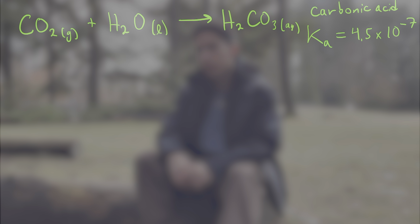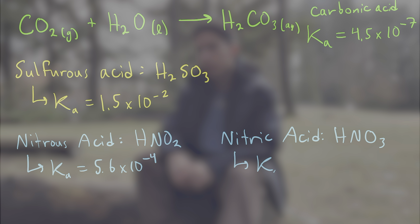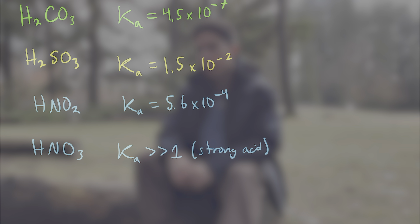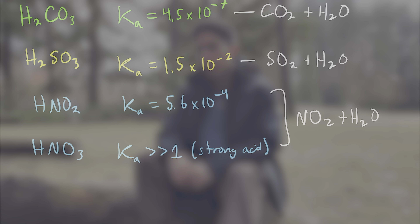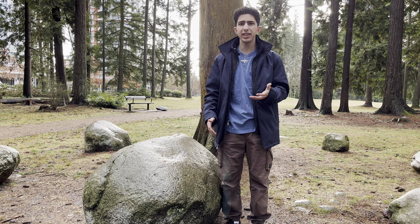The acids that form thanks to the combination of sulfur and nitrogen oxides with water are much more acidic. Sulfurous acid has a Ka of about 1.5 times 10 to the minus 2. Nitrous acid is at 5.6 times 10 to the minus 4, and nitric acid is such a notoriously strong acid that it has a Ka far above 1. The larger the Ka, the stronger the acid. These three acids are many orders of magnitude stronger than carbonic acid, which is why elevated SO2 and NO2 levels create acid rain while elevated CO2 levels do not.